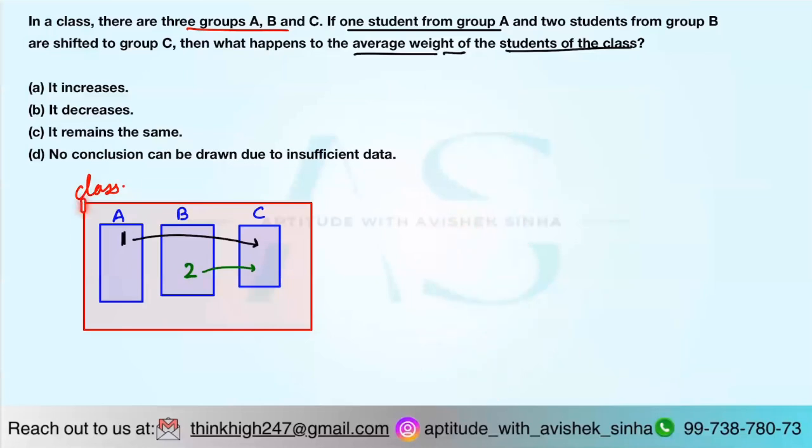So average weight of this particular batch or class would be calculated as weight of students A, weight of students in B, and weight of students in C upon the total number of students in A, B, and C, right? But in this question it says one student is shifted from A to C, two are shifted from B to C. No one goes out, no one comes in. So if that is the case, the average weight of the whole class does not change.